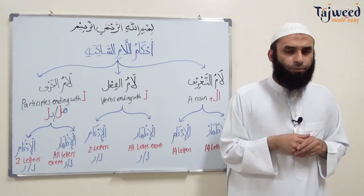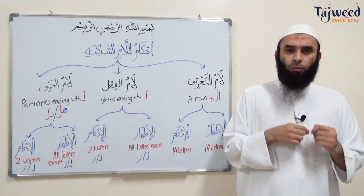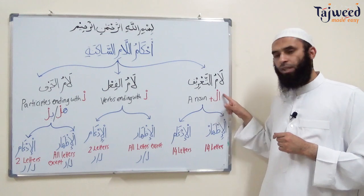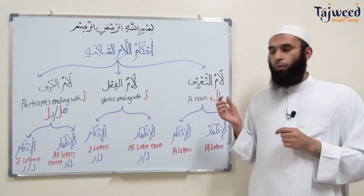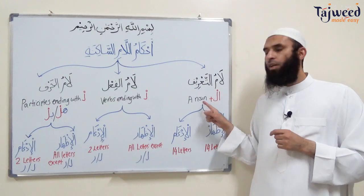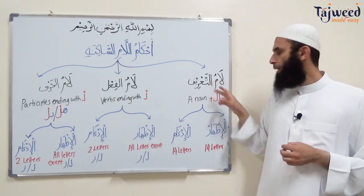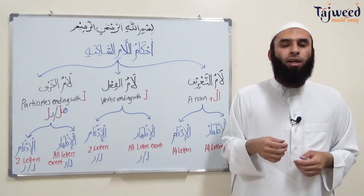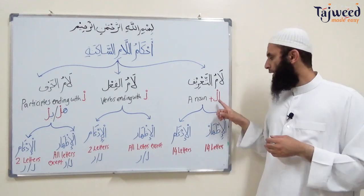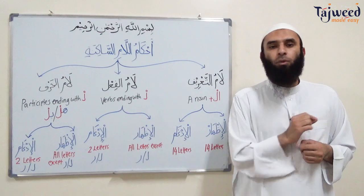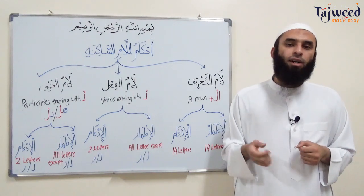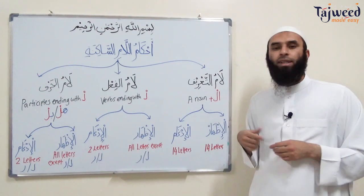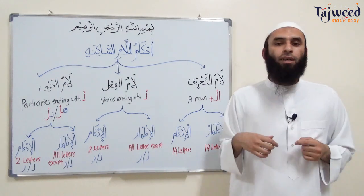اللام الساكنة can come into all these categories. When it comes into a noun, it's written in the beginning of the noun to make that noun specific. This is called لام التعريف - the لام that makes the noun definite. For example, كتاب means 'a book,' but if I want to talk about a specific book I add the لام الساكنة to get الكتاب - 'the book.' Similarly, سيارة becomes السيارة - 'the car.'